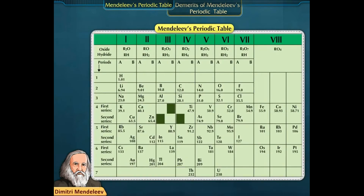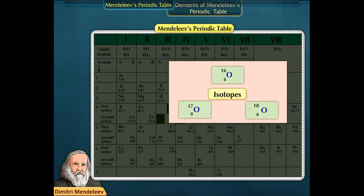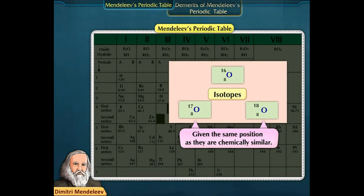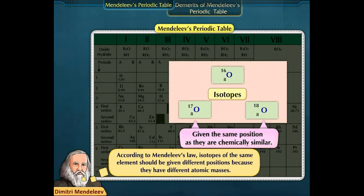Another demerit was that isotopes of the same element were given the same position in the periodic table. For example, isotopes of Oxygen were given the same position as they are chemically similar. However, according to Mendeleev's law, isotopes of the same element should have been given different positions because they have different atomic masses.